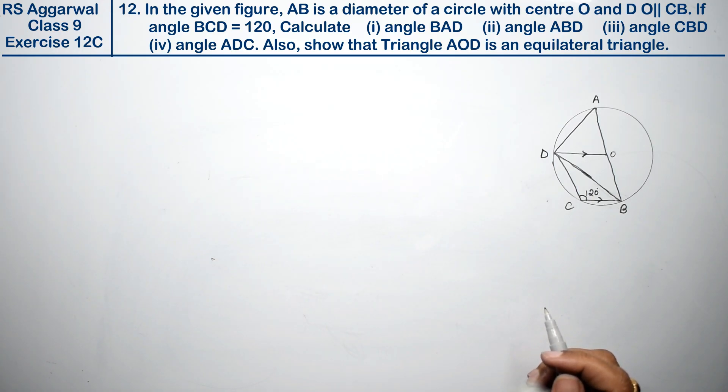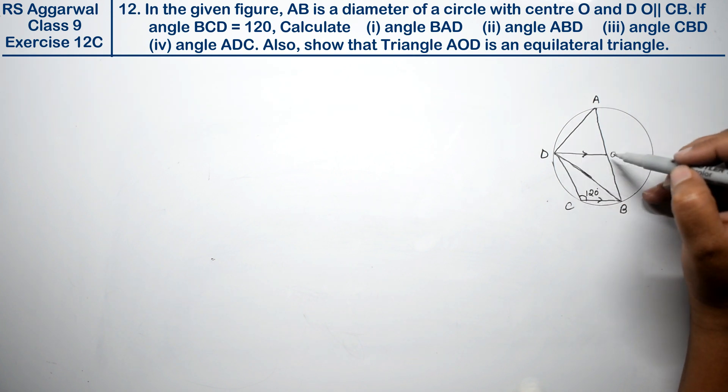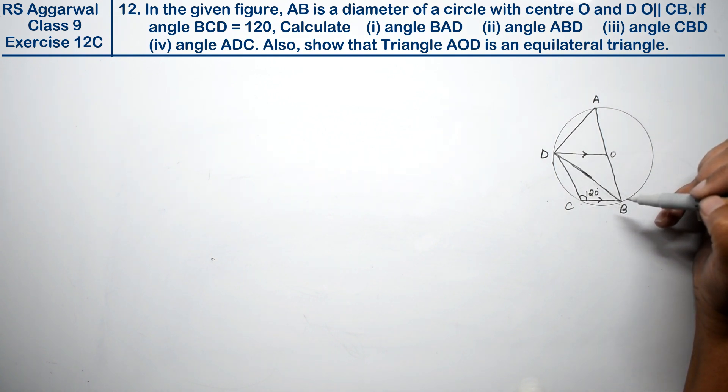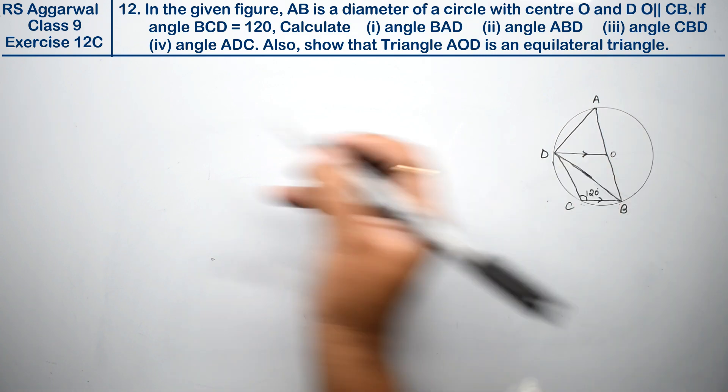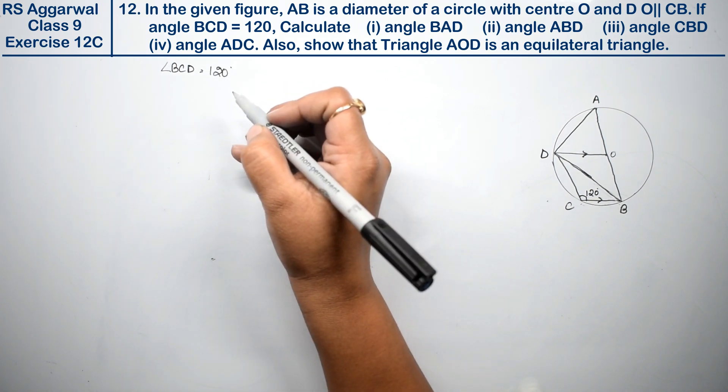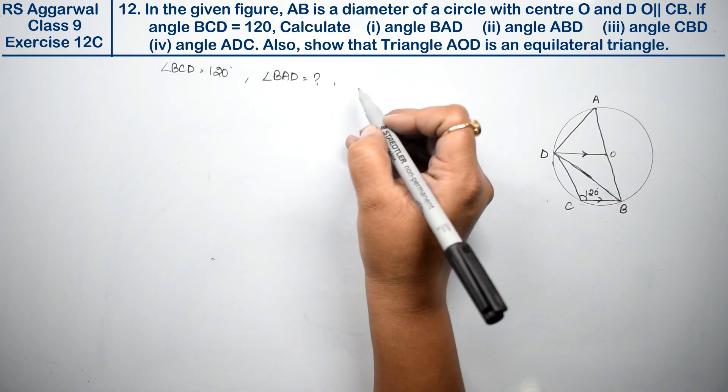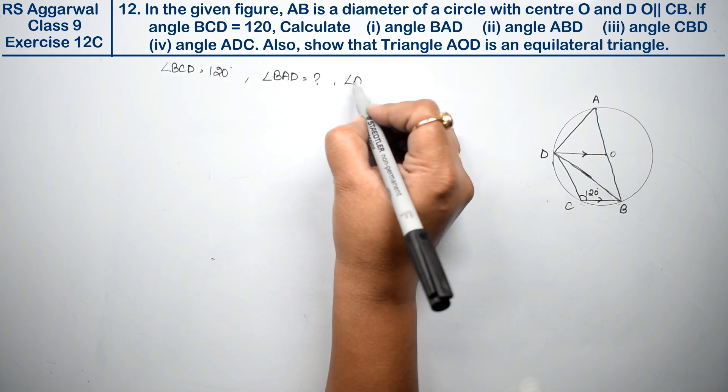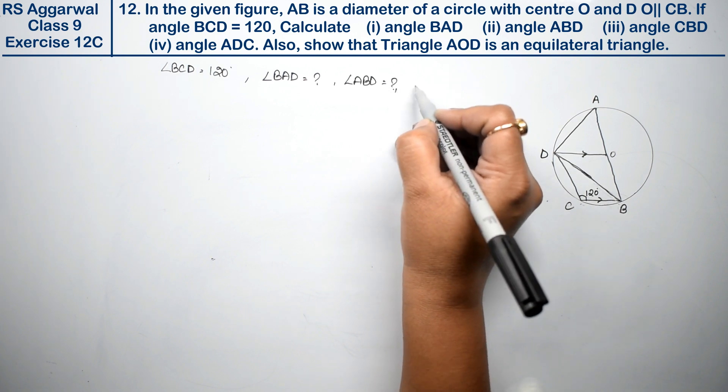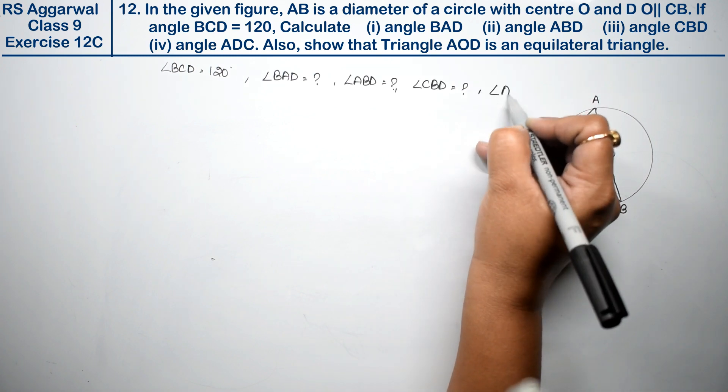Let's do question number 12 of exercise 12C on circles. In the given figure, AB is a diameter of a circle with center O, and DO is parallel to CB. If angle BCD equals 120 degrees, calculate angles BAD, ADB, ABD, CBD, and ADC.